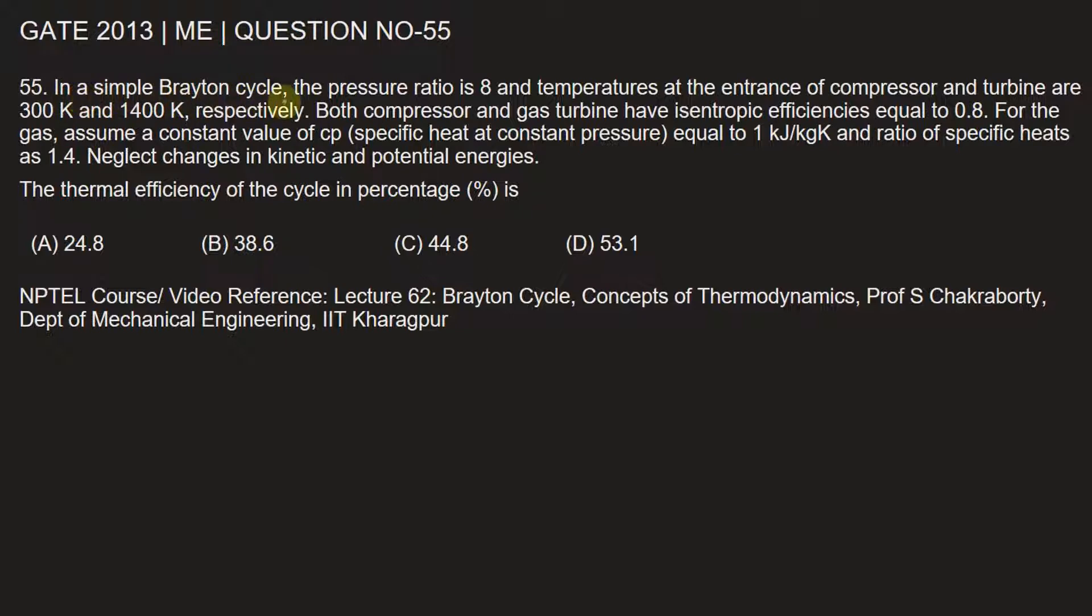The question is: In a simple Brayton cycle, the pressure ratio is 8 and temperature at the entrance of the compressor and turbine are 300 Kelvin and 1400 Kelvin respectively. Both compressor and gas turbine have isentropic efficiencies equal to 0.8. For the gas, assume a constant value of Cp, that is specific heat at constant pressure, equal to 1 kilojoule per kilogram Kelvin, and ratio of specific heats as 1.4, that is gamma is equal to 1.4. Neglect changes in kinetic and potential energies. The thermal efficiency of the cycle in percentages.